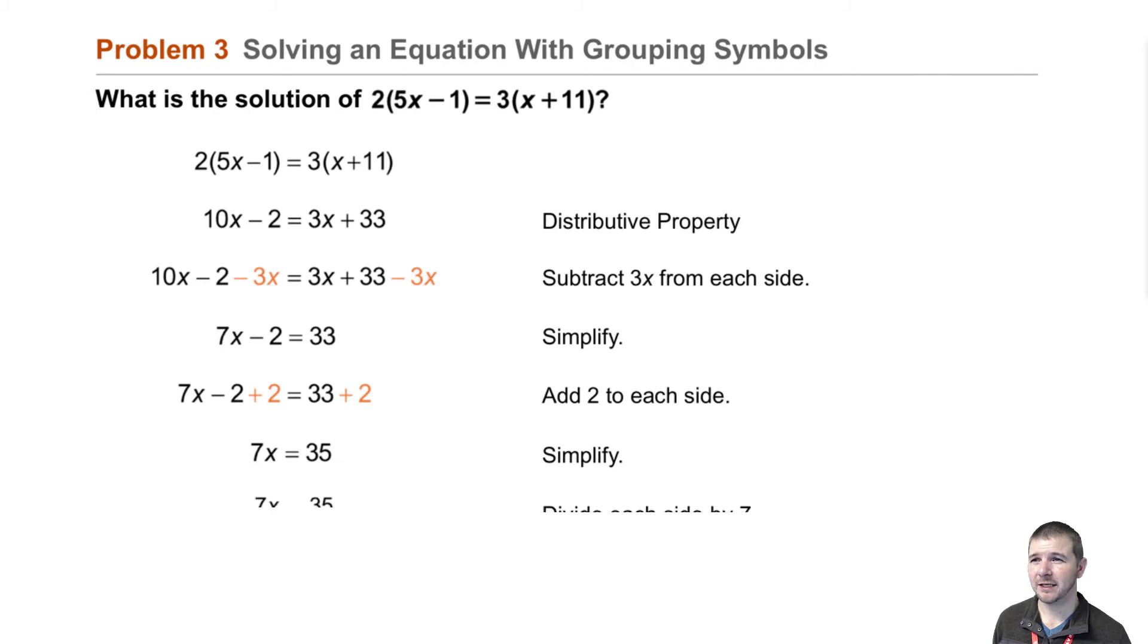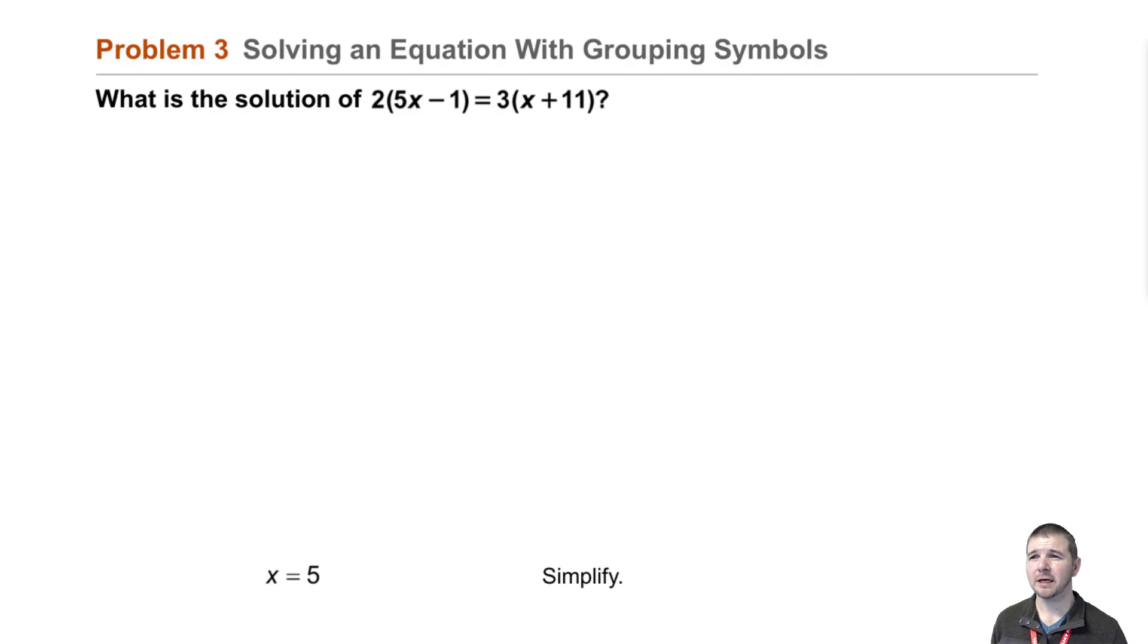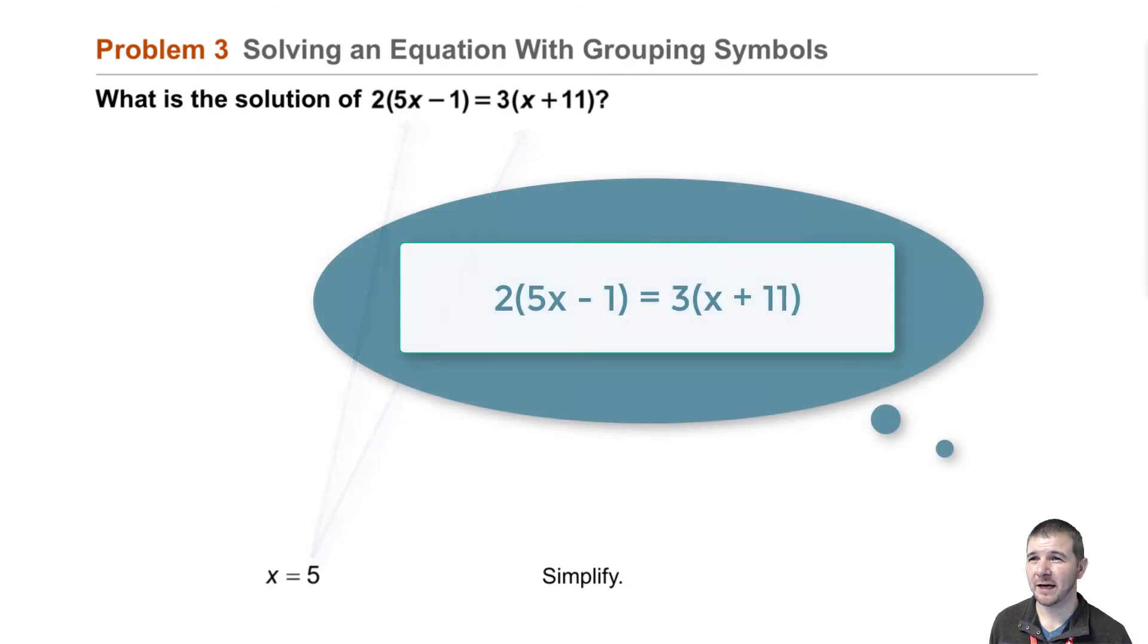Of course, we should check using substitution. Plug 5 in for x in the original equation and check: 5 times 5 is 25, 25 minus 1 is 24, 24 times 2 is 48.